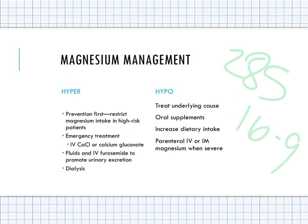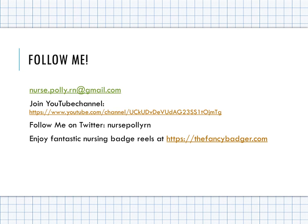Hypomagnesemia is a magnesium level less than 1.5, seen in chronic alcoholism, significant GI losses, and nutritional issues. Signs and symptoms include confusion, muscle cramps, tremor, seizure, vertigo, increased tendon reflexes, and positive Chvostek's and Trousseau's signs. Treat the underlying cause; give oral supplements, increase dietary magnesium intake, or give parenteral magnesium for severe deficit.